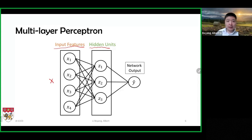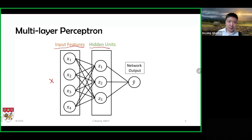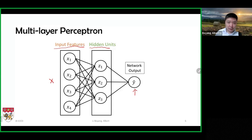Each logistic unit takes the four-dimensional vector x as input and outputs a single value. I'll call these values z1 through z3. On top of these three logistic regression units, I have another single logistic unit whose input is z1 to z3. So the three-dimensional vector z is input to the second layer, which contains a single logistic regression unit, and its output is the output of the entire network, which we call y-hat.